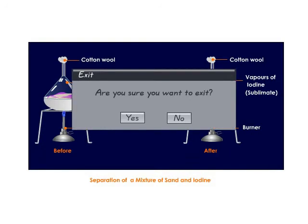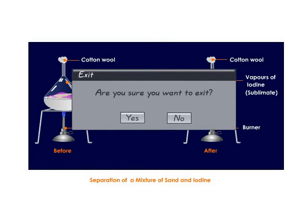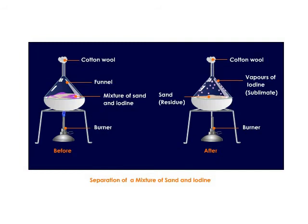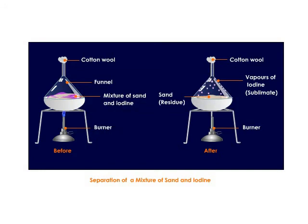Separation of a mixture of solids: to separate solids with big enough particle sizes, you can simply hand-pick the substances. However, if the substances have a small size, different methods are needed. To separate a mixture of iodine and sand, take the mixture in a closed container and heat it over a flame. At a certain temperature, iodine will start vaporizing directly without becoming a liquid. When you condense or cool the collected iodine vapors, you get back solid iodine.